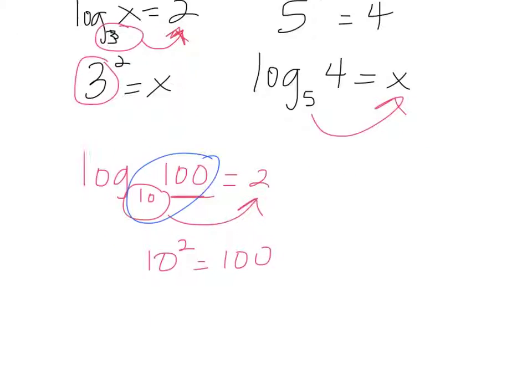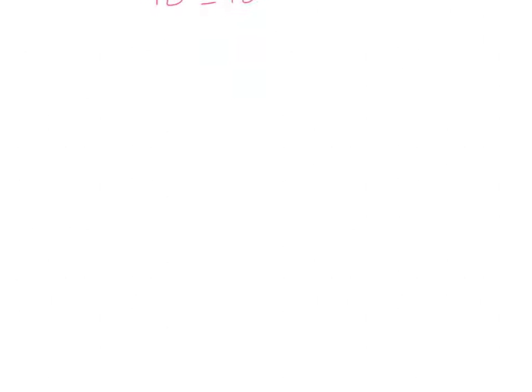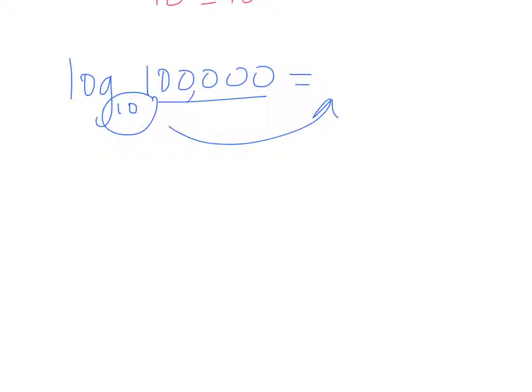So let's say I give you some problems. And I say, what is log base 10 of 100,000? So 10 raised to some power gives me 100,000. In cases like this, when you have base 10, you really just count the zeros. So it would be 1, 2, 3, 4, 5 zeros, so your answer would be 5.